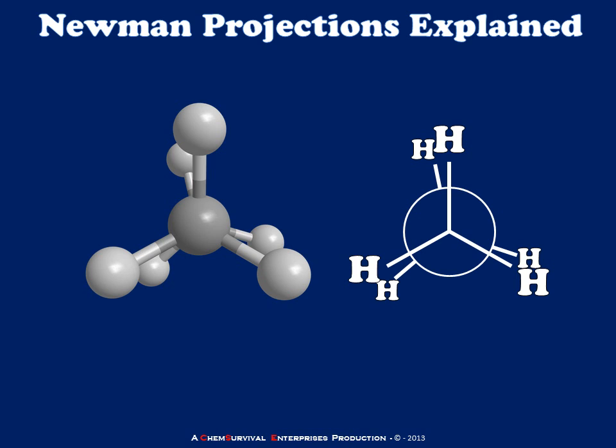As you can see, a Newman projection gives us a very rapid way to convey a very specific bond angle. Next time we'll take a look at how substituents can affect how Newman projections look, and I'll see you then.